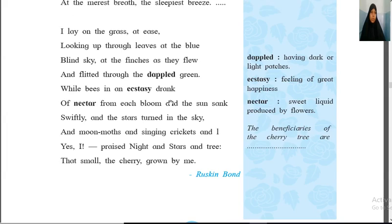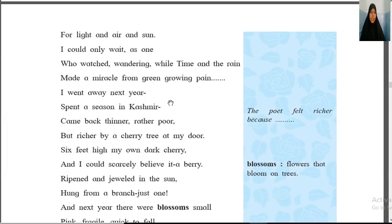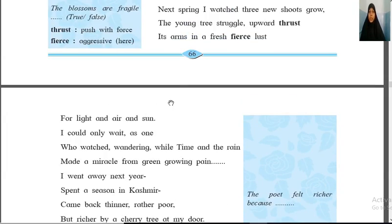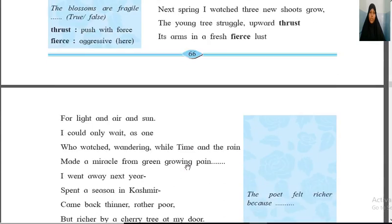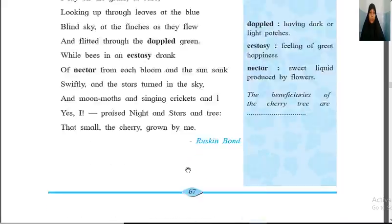You have to tell the lines where the poet has used different seasons. In the line 'and suddenly that summer, near the end of May,' the summer season is mentioned. Then 'split it apart and a monsoon blight' — here monsoon season is mentioned. Then 'next spring, I watched three new shoots grow' — here the spring season is mentioned. These are the three examples as proof for that question.